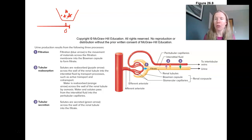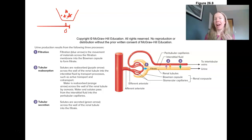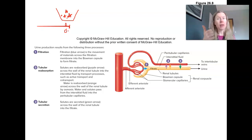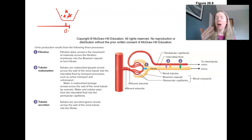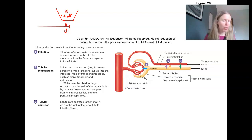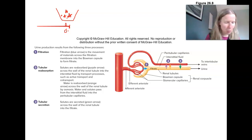The same thing happens when you're filtering blood. Things like blood cells — red blood cells, white blood cells, platelets — and big things like proteins should stay behind. They stay in the bloodstream. What drips out as filtrate is a lot of water and solutes — small things like sodium, chloride, any ions that can fit through. Monosaccharides like glucose will actually get filtered out of the blood. That's what's going on with filtration.